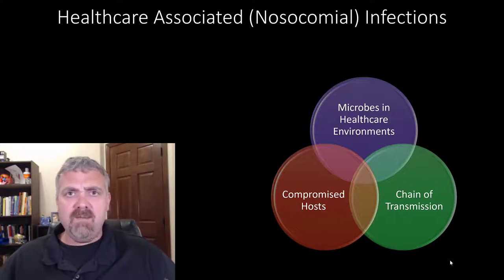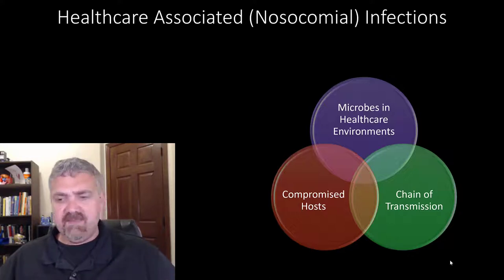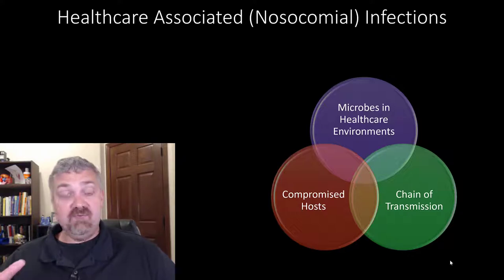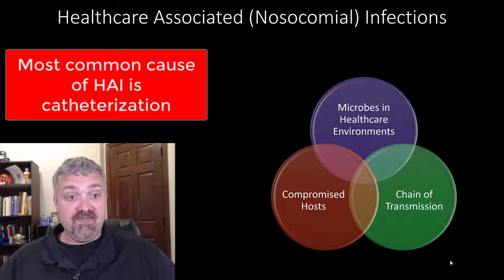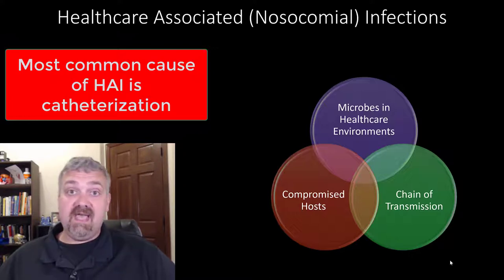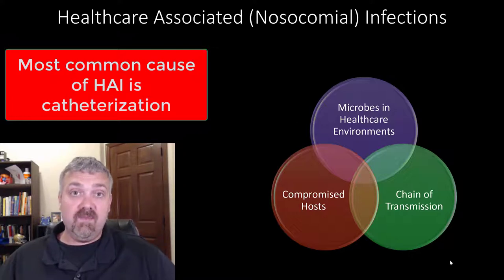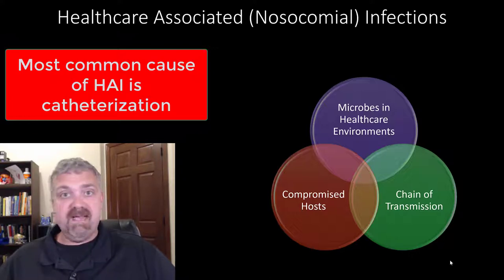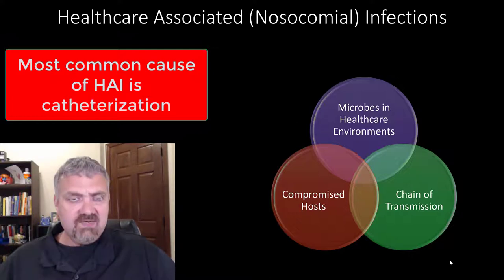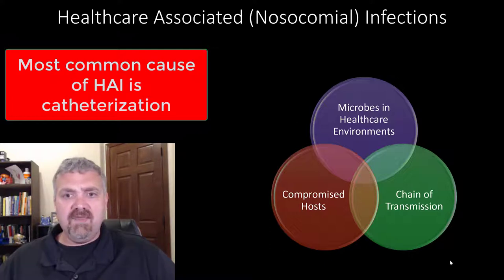The most common and most dangerous microbes change over time — it bounces between staph, C. diff, strep, and Pseudomonas is a big one now. But the most common cause of nosocomial infections is catheters: urinary tract infections from urinary catheters and bacteremia from intravenous catheters. Together those are the most common. Then you have surgical site infections — you just cut a hole into someone, so microbes getting in makes sense. Gastrointestinal infections like C. diff are also becoming very common.